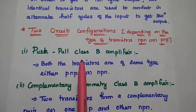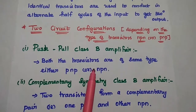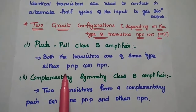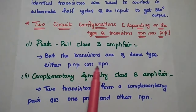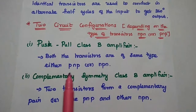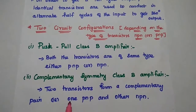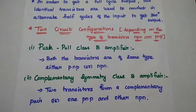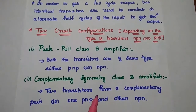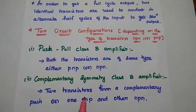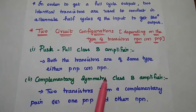One is push-pull class B amplifier. In this configuration, both the transistors are of the same type — that means both transistors can be either PNP or NPN type. The next one is complementary symmetry class B amplifier. In this one, two transistors form a complementary pair: one is PNP and another one is NPN. Now we are going to discuss push-pull class B amplifier in this video lecture.